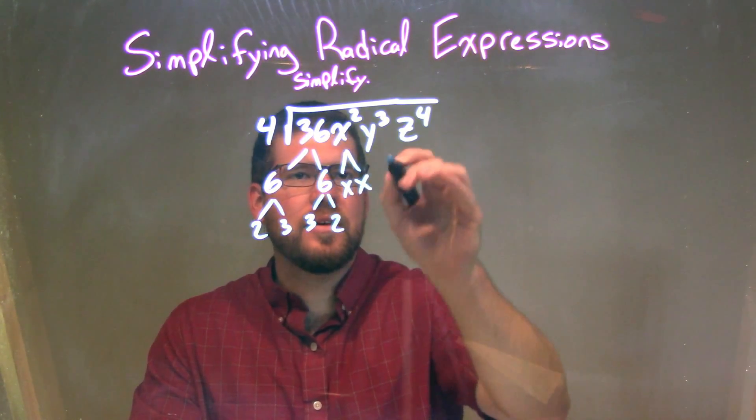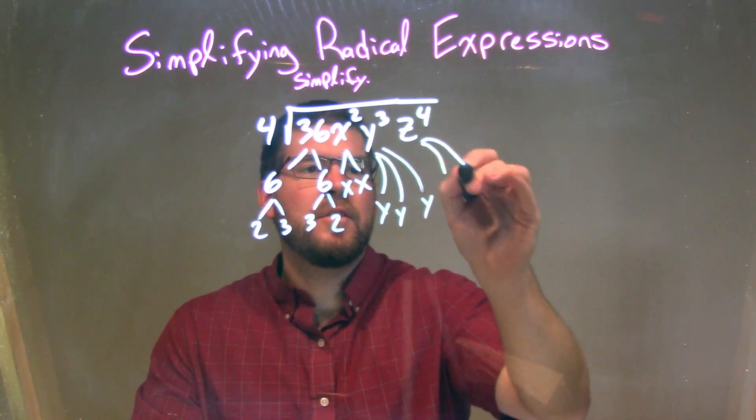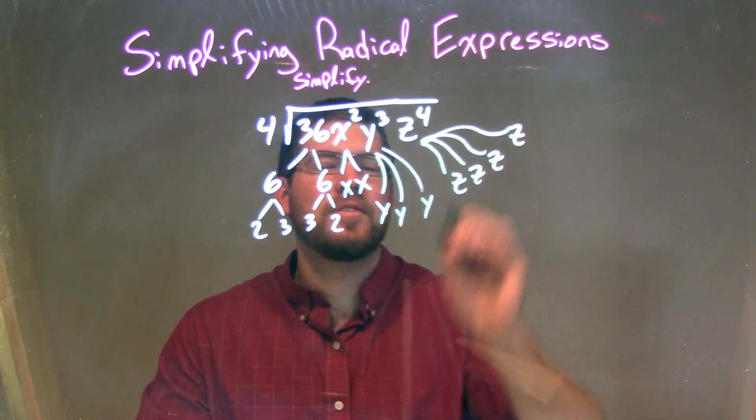Okay, x squared is x times x, y to the third is just y times y times y, and z to the fourth is just z times z times z times z.